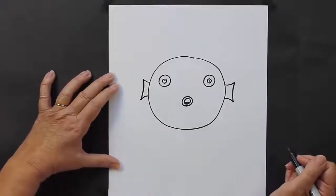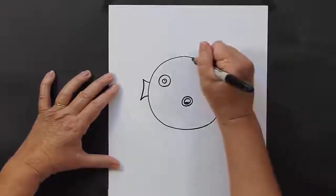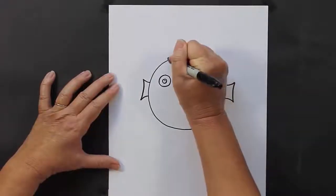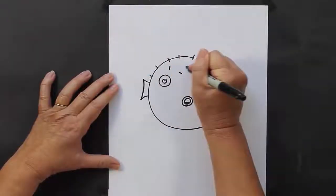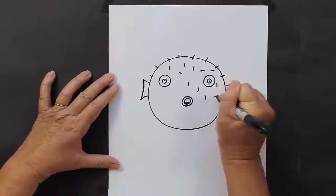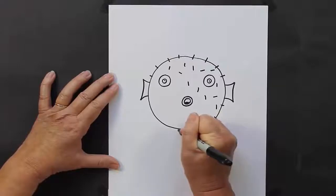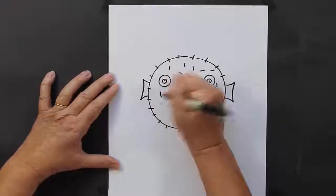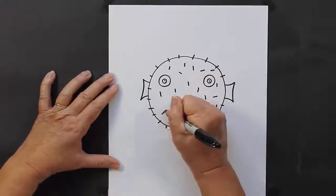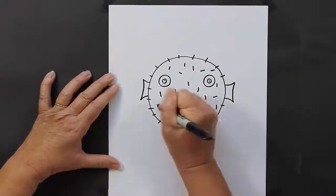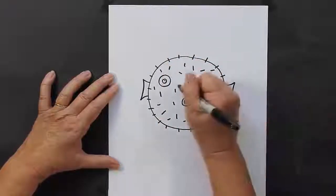Now what he needs to make him a puffer fish is he needs to have his spikes. So, all over his body, going different ways, you can start making his spines. And this is what protects him from predators in the ocean. You can put a lot, or you can put a few. It's totally up to you.